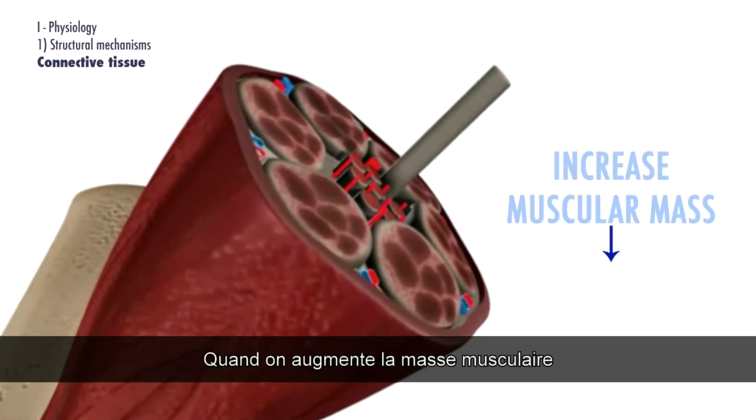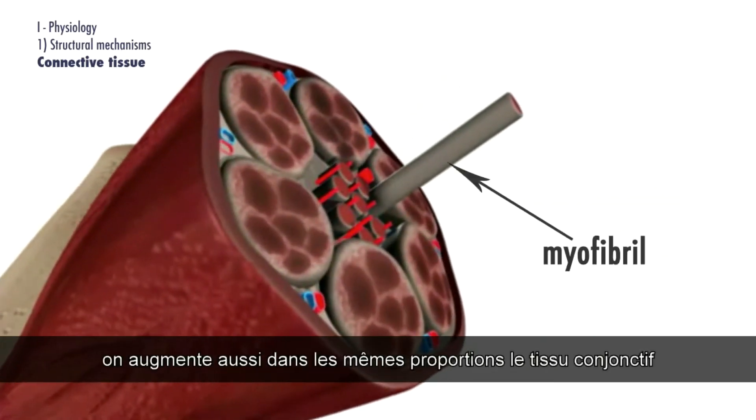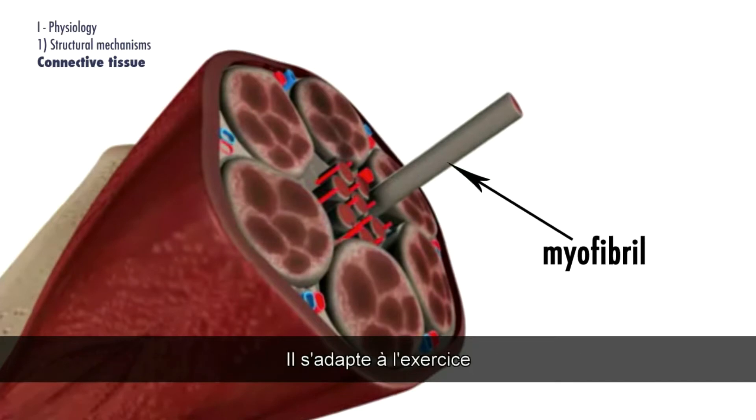When we increase muscular mass, we also increase connective tissue in the same proportion. It adapts to strength workouts.